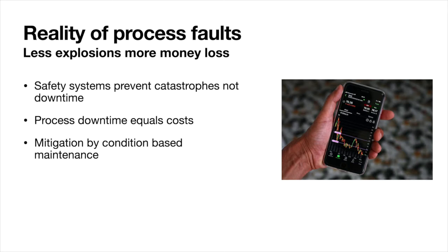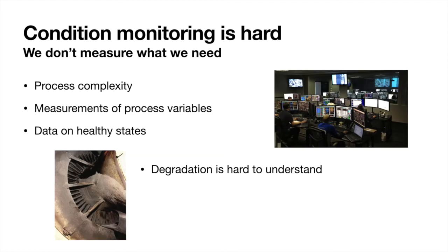Generally, safety systems will prevent catastrophic situations. However, they will not stop downtime. And such downtimes lead to substantial costs for the operator. These things can be mitigated by condition-based maintenance. In order to do so, we need to detect the situation that the fault is about to occur. However, condition monitoring is generally a difficult problem.